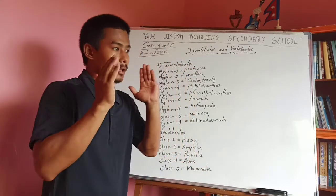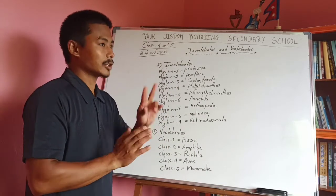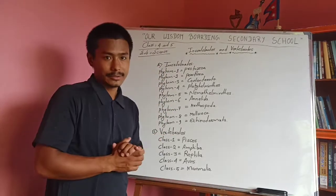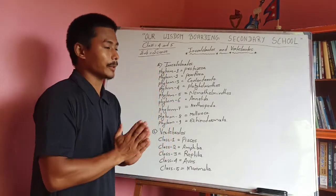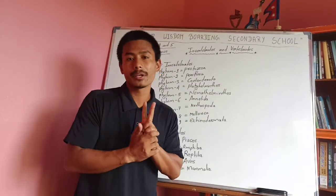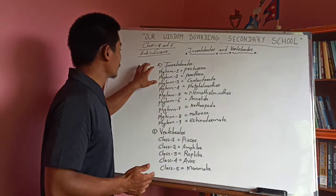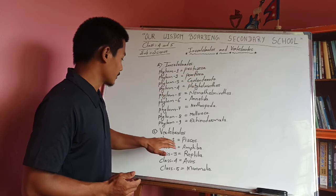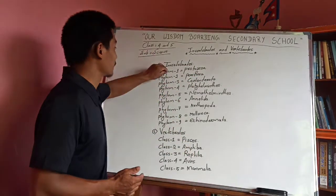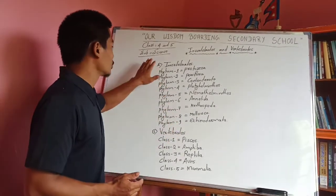In the field of animals, we know that animals are different. Invertebrates and invertebrates with their group of animals are different. They are required to be classified into different paths.